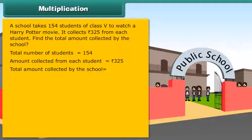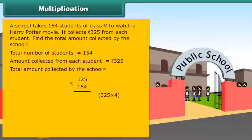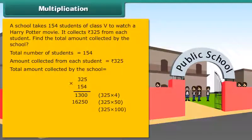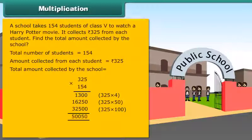Total amount collected by the school is equal to 325 multiplied by 154. First, we multiply 325 by 4. Then we multiply 325 by 50. Finally, we multiply 325 by 100.